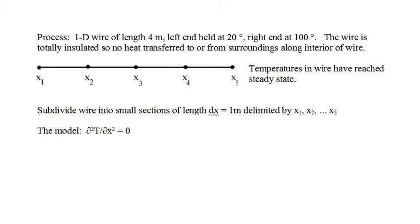We have our first problem: a 1D wire of length 4 meters with the left end held at a fixed temperature of 20 degrees K and the right end held at a constant 100 degrees K, and we wait until the system has reached steady state. Note that there is no transfer of heat from the wire to the environment anywhere but at the endpoints, so you can think of the wire as being fully insulated. We subdivide the total length into four subsections delimited by a grid of five points, x sub 1 through x sub 5, with x sub 1 being the left endpoint and x sub 5 the right endpoint. Our goal is to calculate the steady-state temperatures at the interior grid points.